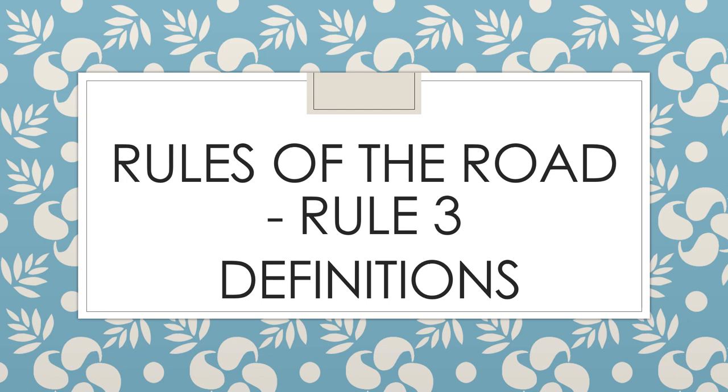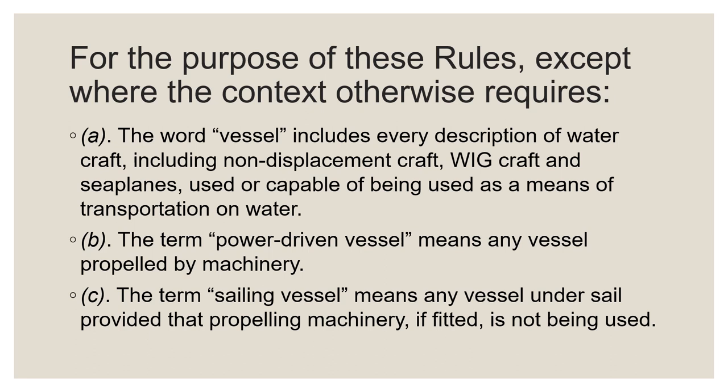Part A of this rule talks about the word 'vessel.' All vehicles that operate on the water are actually vessels, including displacement craft — those that float or are supported by the static buoyancy derived from the water their hulls displace — or non-displacement craft, those supported by the dynamic lift of hydrofoils or other lifting surfaces, as well as seaplanes. The phrase 'used or capable of being used as a means of transportation' implies the practical transportation of people or cargo.